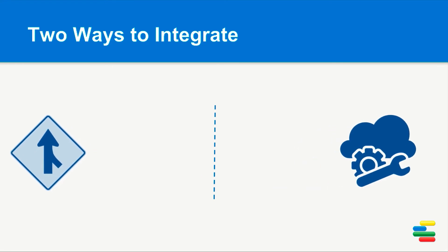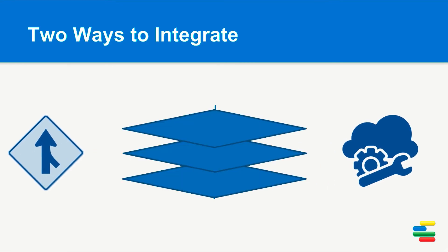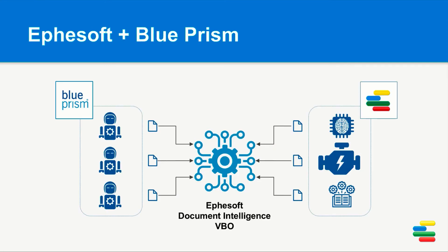Leveraging these two methods creates a smart document layer within your organization. To simplify mid-process calls to our APIs, FSOF has developed a Document Intelligence Visual Business Object, or VBO, that plugs into Blue Prism Design Interface. This allows seamless real-time transparent access to expose the unstructured data in your documents.